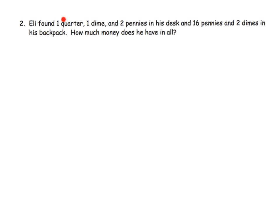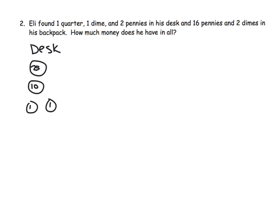Here we find that Eli found one quarter, a dime, and two pennies in his desk. And he found 16 pennies and two dimes in his backpack. How much money does he have in all? So what we're going to do first is represent what he found in his desk. In his desk he found a quarter, a dime, and two pennies.